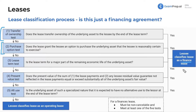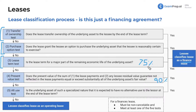The lease term test: this is 75%. If you are leasing an asset for 75% of its useful life, it's considered a finance lease. The next threshold is 90%. So if I'm leasing a car for seven and a half years and its useful life is 10 years, that's a finance lease. If I'm leasing it for only three years out of ten, that's 30% — well below 75%.